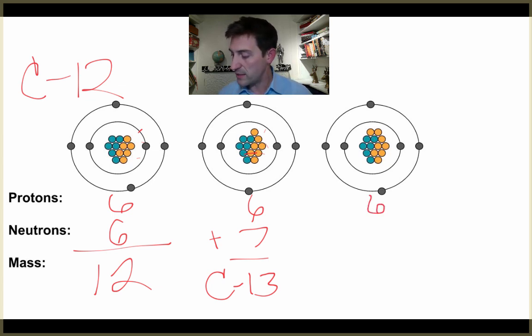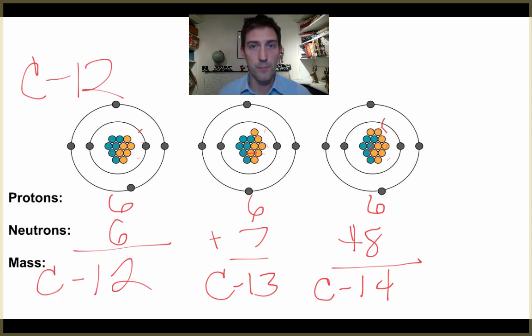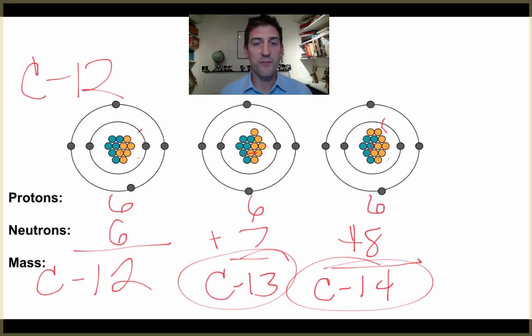This is an isotope of carbon-12. This one has got six and it's got one, two, three, four, five, six, seven, eight neutrons over there. Six plus eight is 14. So we've got carbon-12, carbon-13, and carbon-14. They're isotopes because they have a different number of neutrons, but they're still carbon.